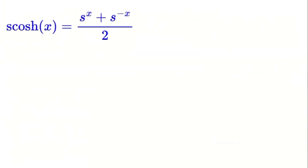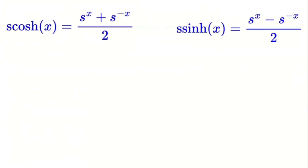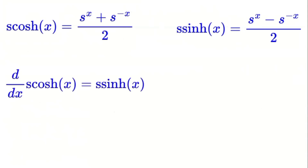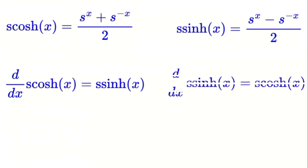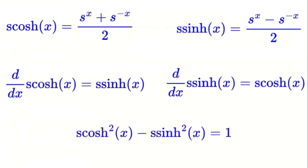Now let's define the S hyperbolic functions. We have S cosh of X, defined as S to the power of X plus S to the power of negative X, all divided by 2. Similarly, S sinh of X is defined as S to the power of X minus S to the power of negative X, all divided by 2. These functions satisfy properties similar to the standard hyperbolic functions. For example, the derivative of S cosh of X is S sinh of X, and the derivative of S sinh of X is S cosh of X. They also satisfy the identity S cosh squared of X minus S sinh squared of X equals 1. These functions give us another way to explore the behaviour of the improved S-function.